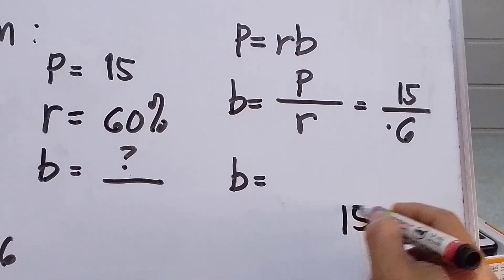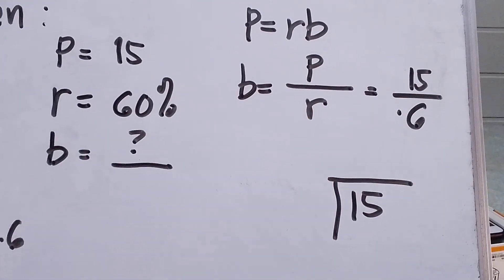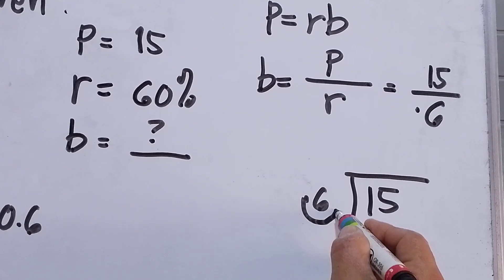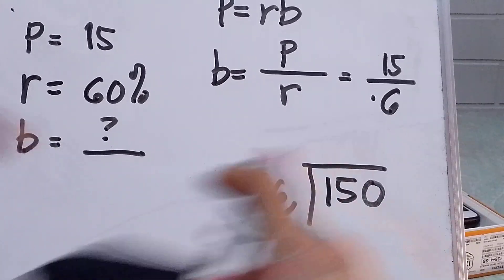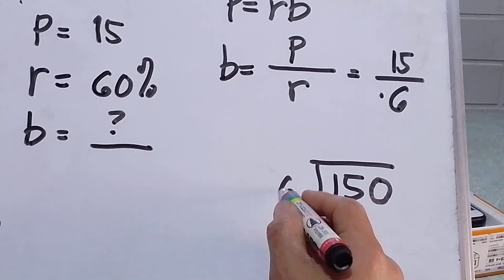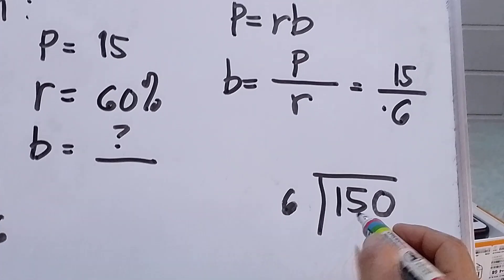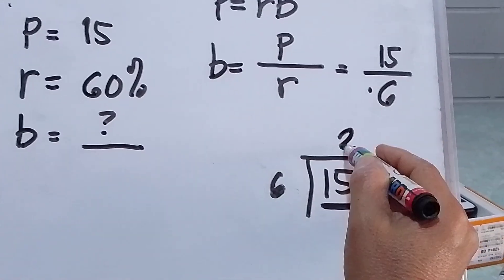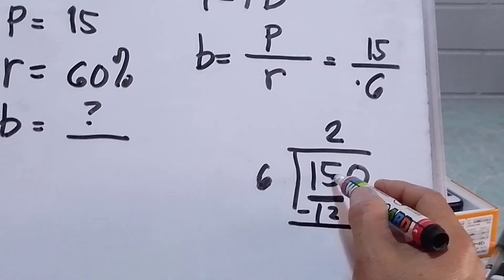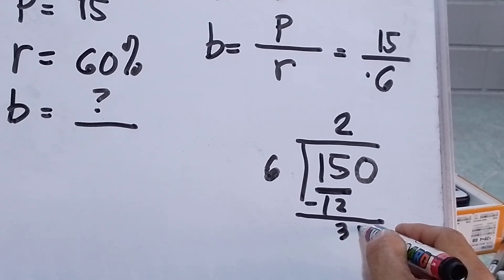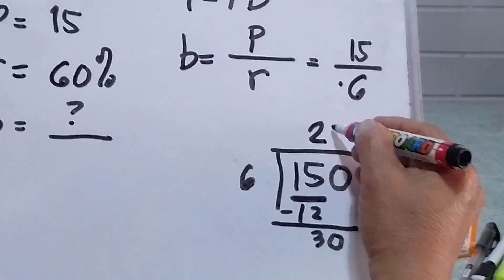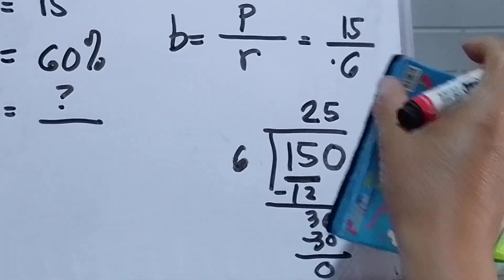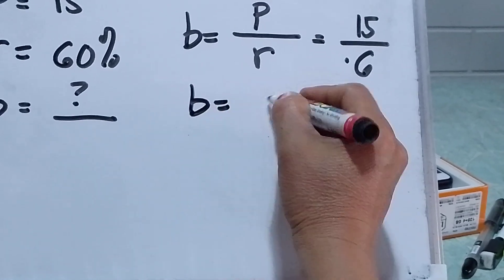We now divide 15 by 0.6. To eliminate the decimal from the divisor, we move it to the right, making it 150 divided by 6. Estimating: 6 goes into 15 twice (6 times 2 is 12, remainder 3), bring down 0 to get 30, and 6 goes into 30 five times. So B equals 25.